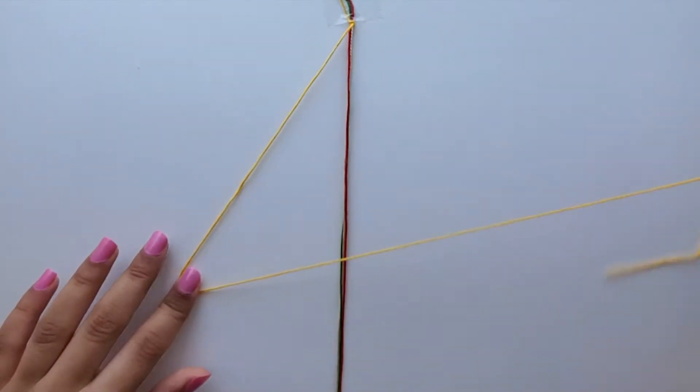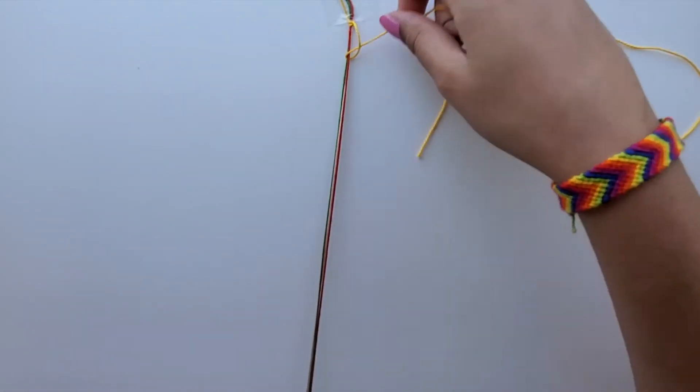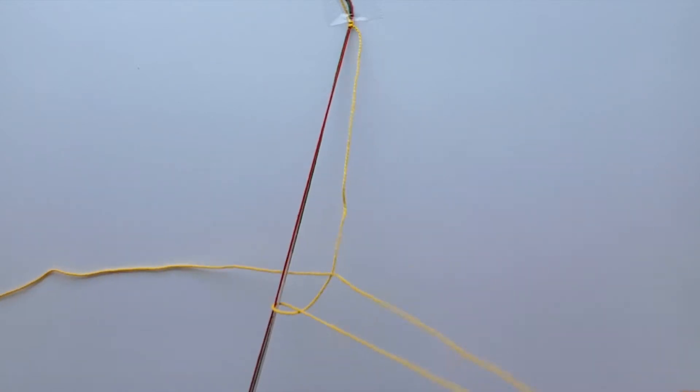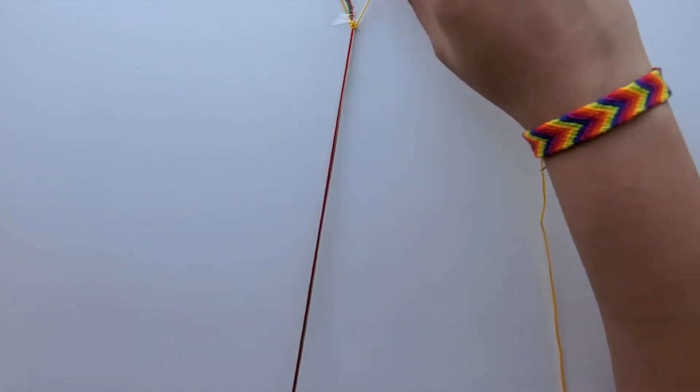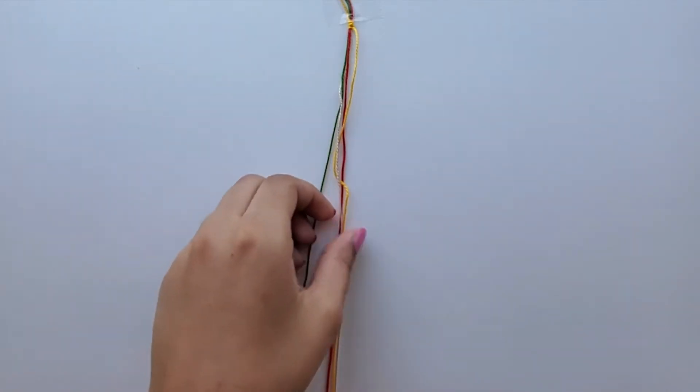And then this is all you're going to do: make forward knots and backward knots until your bracelet loop is large enough. To switch the color, take the next left string and then make forward and backward knots again.